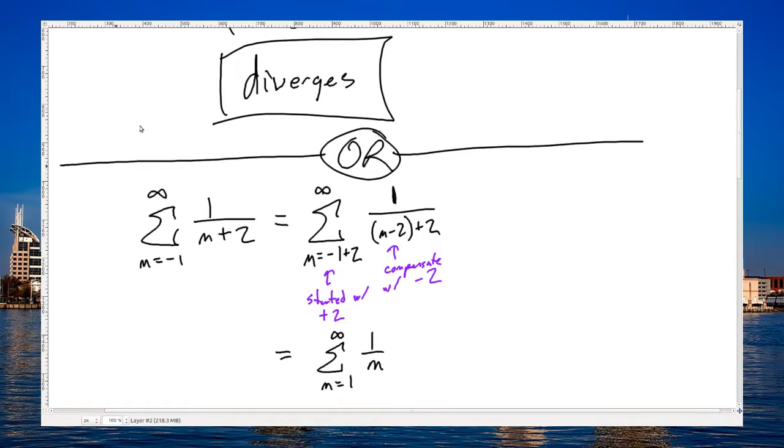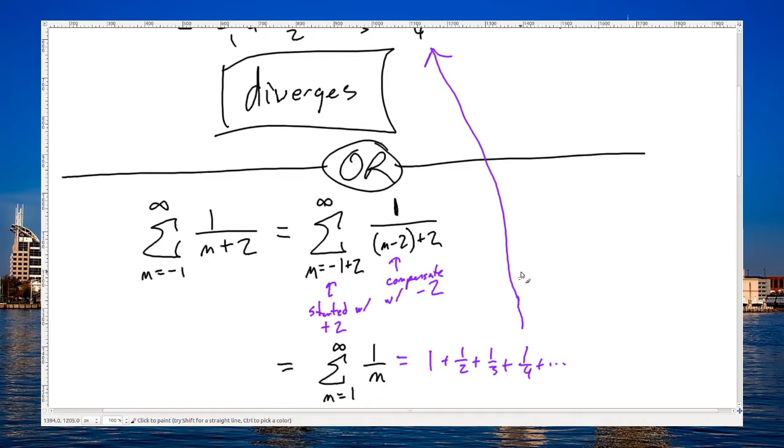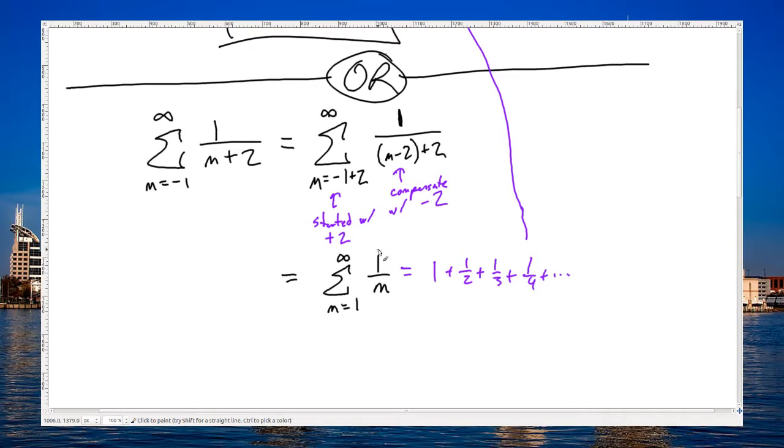And I better end up with the same thing that I got a moment ago. That's 1 plus 1 half plus 1 third plus 1 fourth. And that sure is the same thing as what I got a moment ago. Alright, and more importantly, when it's written like this, it's very obvious that this is the harmonic series.